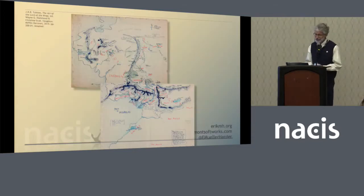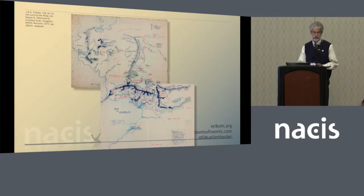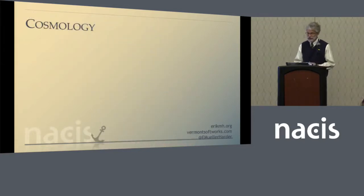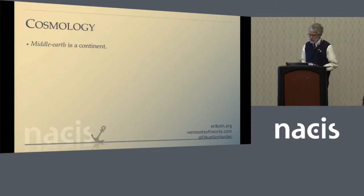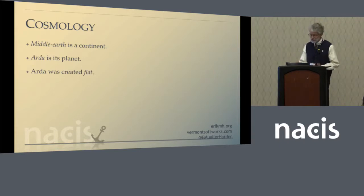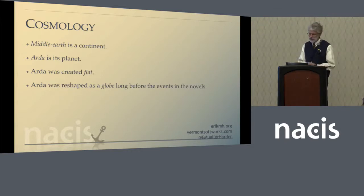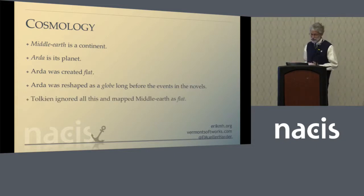Now, all you proper cartographers here will no doubt have surmised that these maps are not projected, and the short answer is yes, you're right. Sparing you all a Stephen Colbert-style deep dive into the cosmology of Middle Earth, let's just observe that within the story — what Tolkienists and other literary folk call the secondary world, where our own world is primary — Middle Earth is a continent. The planet is called Arda. Arda was created flat, then reshaped as a globe by the Valar gods or demigods some 3,000 years before the events of the novels. Nevertheless, Tolkien ignored his own mythological reshaping of Middle Earth and mapped it as if it were flat anyway.